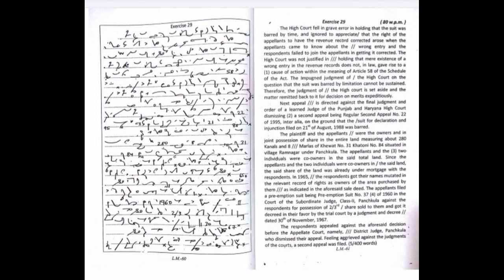The appellants filed a preemption suit, being preemption suit No. 34 of 1960, in the court of the subordinate judge, class 2, Panchkula, against the respondents for possession of two-thirds share sold to them and got it decreed in their favor by the trial court by a judgment and decree dated 30 November, 1967. The respondents appealed against the aforesaid decision before the appellate court, namely, District Judge, Panchkula, who dismissed their appeal. Feeling aggrieved against the judgment of the courts, a second appeal was filed.